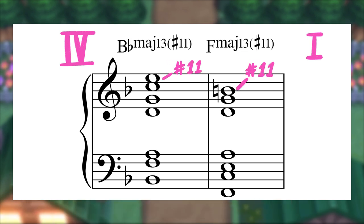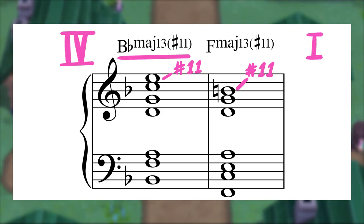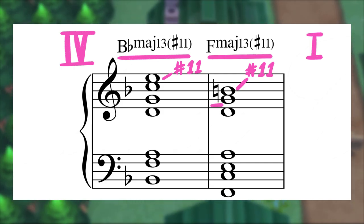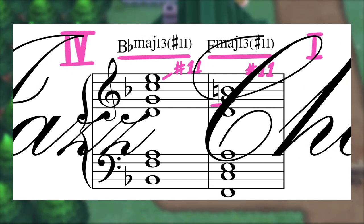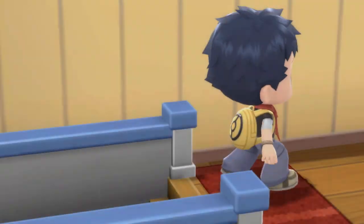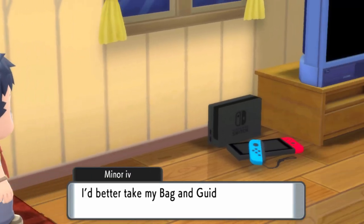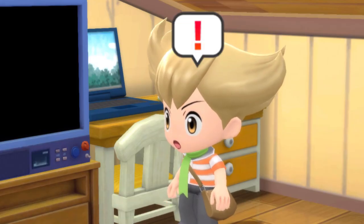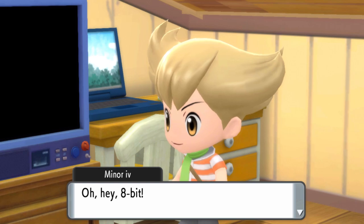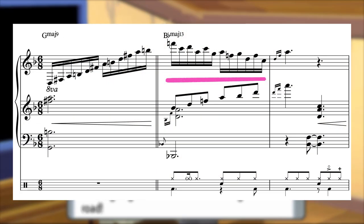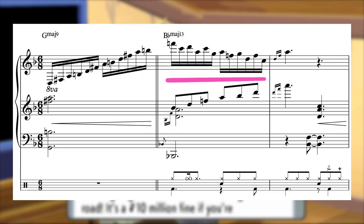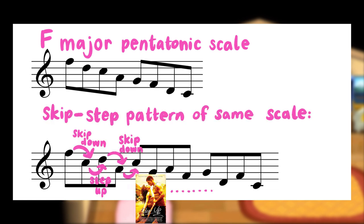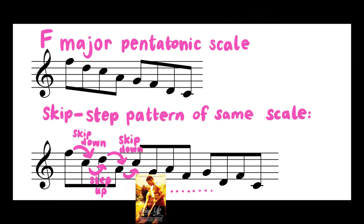The sharp 11th fits naturally over the IV chord, but introducing it over the I chord as well puts us into more of a modal, jazz chord territory. This 16th note harp part that ripples over each chord takes a pentatonic scale and follows it through a skip-down, step-up pattern, like so.